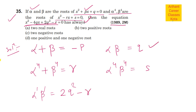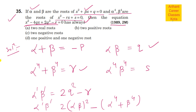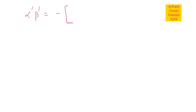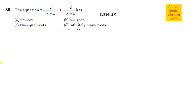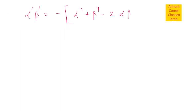अब q की value यहाँ से put करेंगे: 2(alpha × beta)² = 2alpha²beta². और r की value यहाँ से put कर देंगे: alpha⁴ + beta⁴. तो यह alpha dash × beta dash के equal हो गया. यहाँ से minus common लो तो: -(alpha⁴ + beta⁴ - 2alpha²beta²), जो कि minus of (alpha², beta², whole square) बन जाता है.